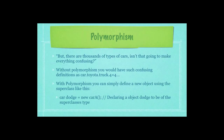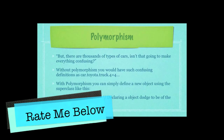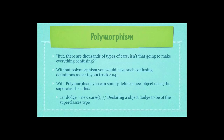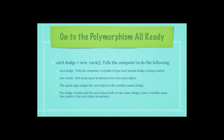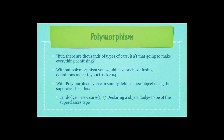Dodge is just a variable name that points to the carA object in memory. But there are thousands of types of cars — without polymorphism, you'd have confusing definitions like car.toyota.truck.4x4 just to define a Toyota truck that was a 4x4. With polymorphism, you can simply define a new object using the superclass. Here I used the superclass car, followed by the object named Dodge, and then assigned it to the carA object, declaring Dodge to be of the superclass type rather than a subclass type.